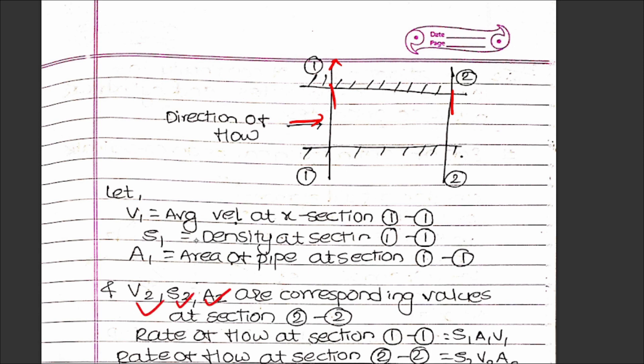Now about rate of flow at section 1. Rate of flow is simply mass upon time. Mass equals density times volume, so mass upon time equals density times volume upon time. Volume upon time is area times length upon time. Length upon time is velocity, so rate of flow equals ρAV. This is the rate of flow at section 1.